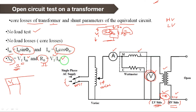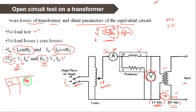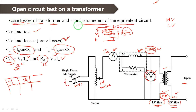I0 is the total no-load current. We pass this current at sufficient voltage. The current passes from the ammeter at no-load. From the wattmeter reading, we get the core losses. To find the core losses and shunt parameters of the equivalent circuit, we connect the wattmeter directly. The open circuit test gives values of V1, I0, and W0 (no-load power / core losses).